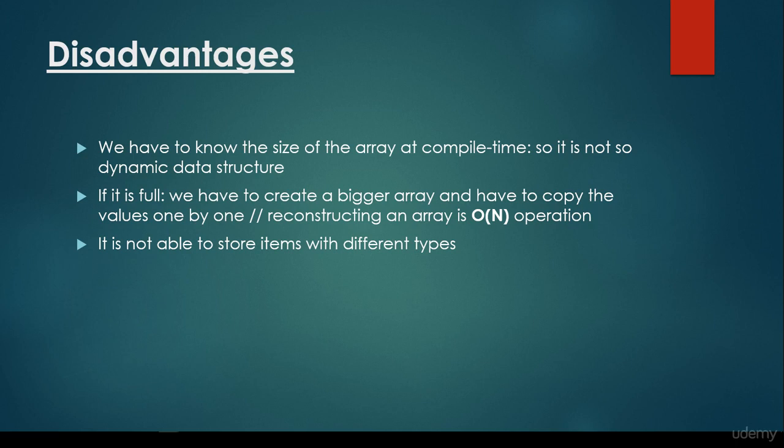And basically, reconstructing an array takes O(n), so linear time complexity. Why? Of course, because we have to copy all the items one by one. So we have to iterate through all the array and we have to copy the items. So that's why it's going to have O(n) linear time complexity. And we are able to solve this problem much faster with the help of linked list data structure. And it's very important that it is not able to store items with different types.